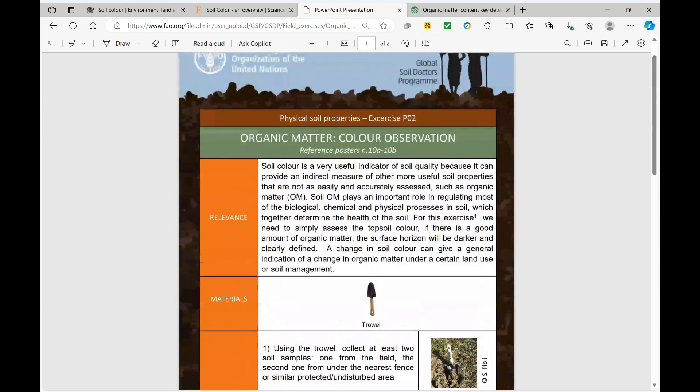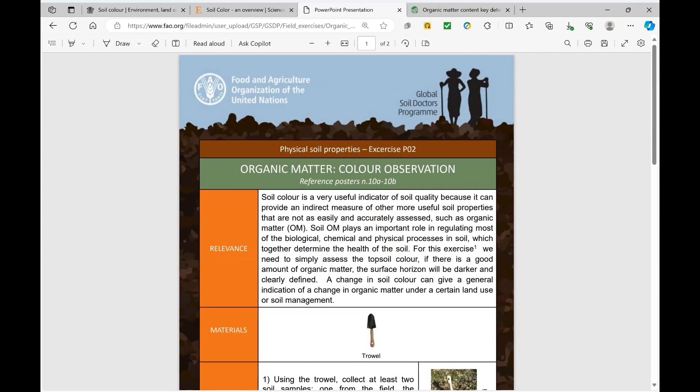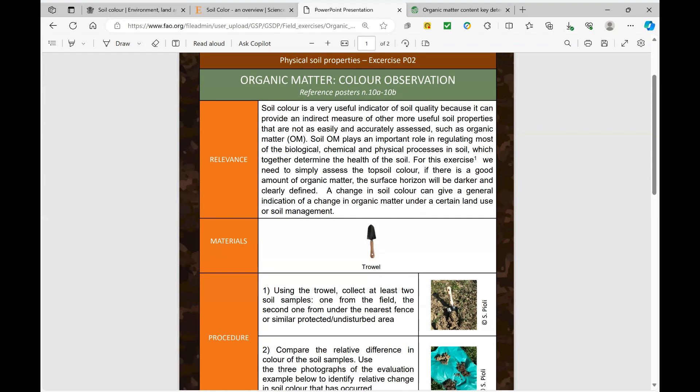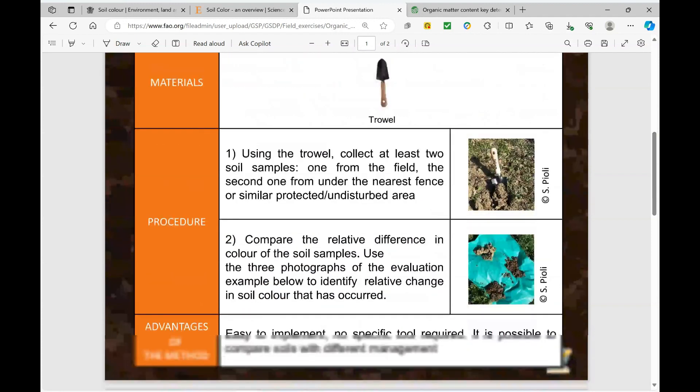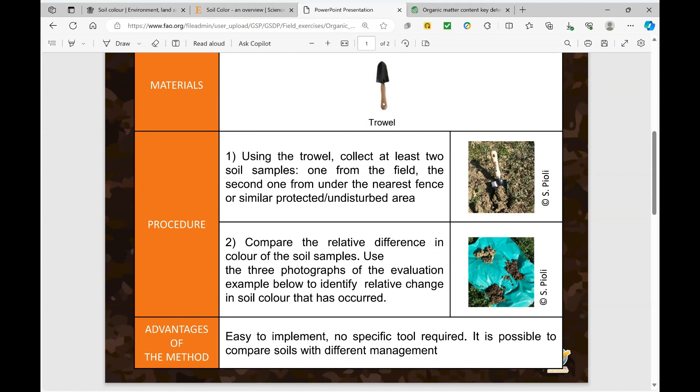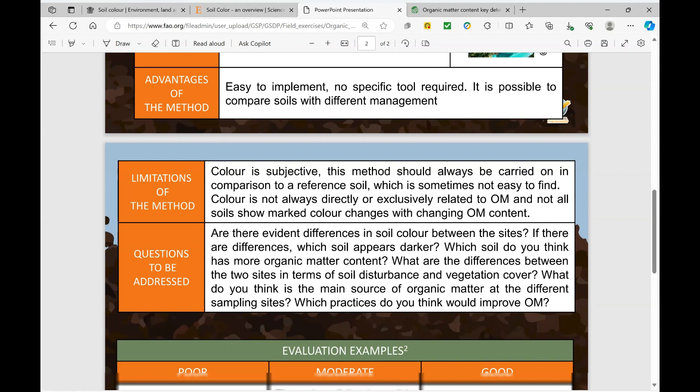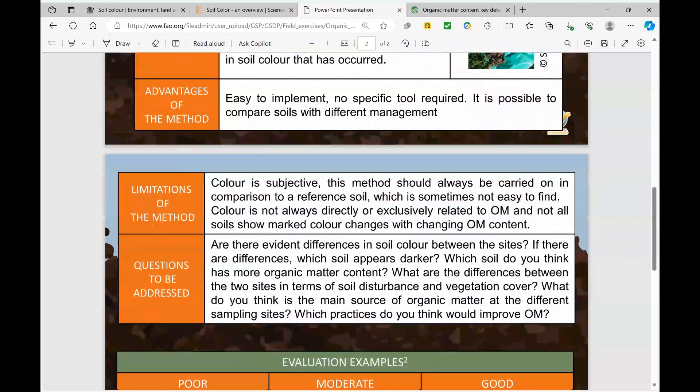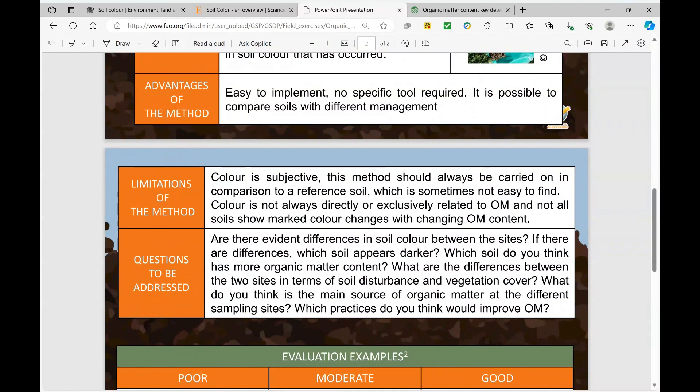Then I looked at organic matter because obviously that's what we're talking about. There is an experiment done by the Food and Agricultural Organization of the UN looking at soil color by observation. But this type of data, although it can be completed, is subjective to the person and can be quite difficult in varied soil samples. Looking through their research, they have materials and procedures like we will have, but they have limitations. They say the color is subjective and would always be carried out in comparison to a reference soil. You'd have to have a base soil or reference soil to measure your color differences, and another limitation is these reference soils are not easy to find.